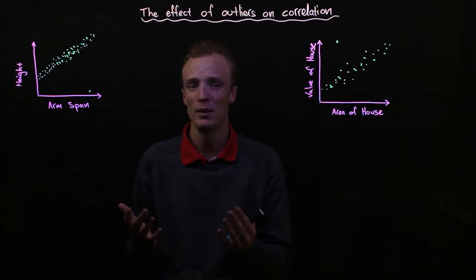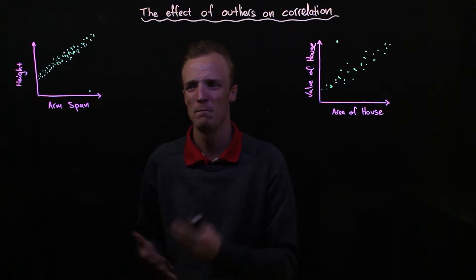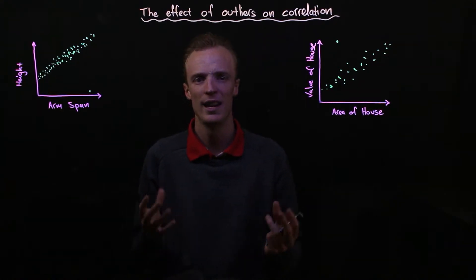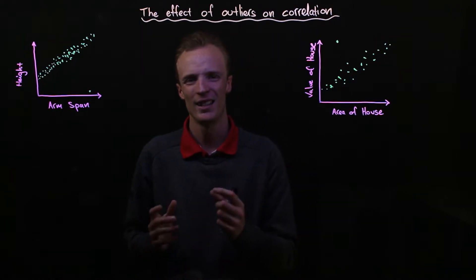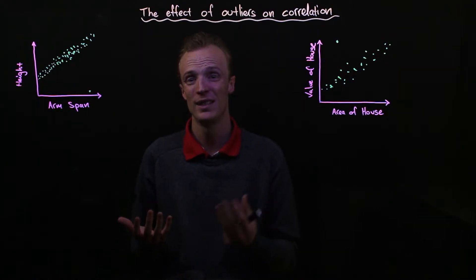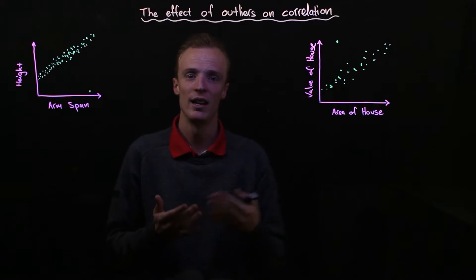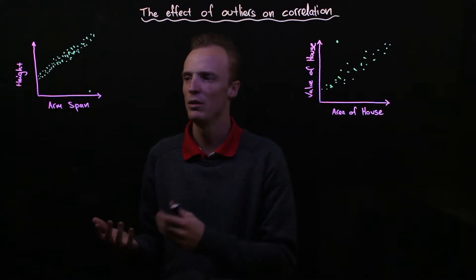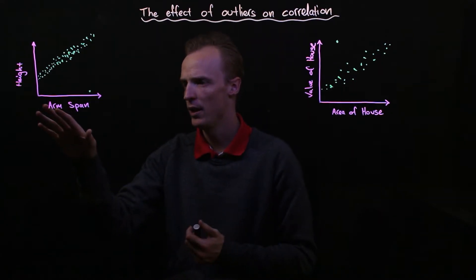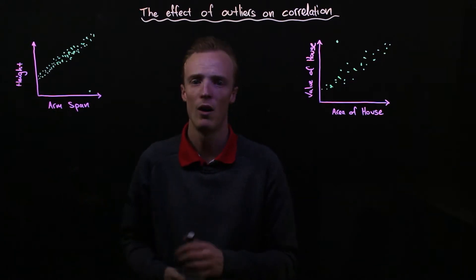So there are times where we need to really look at, should that outlier still be included in our data set? And to answer that question, you actually have to consider each outlier independently and in context of the problem. So here, for example, we've got arm span against height.